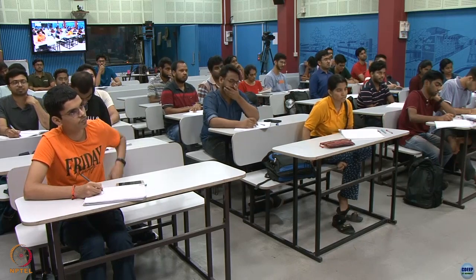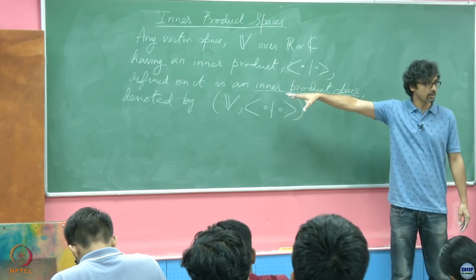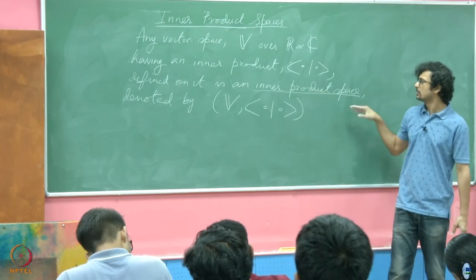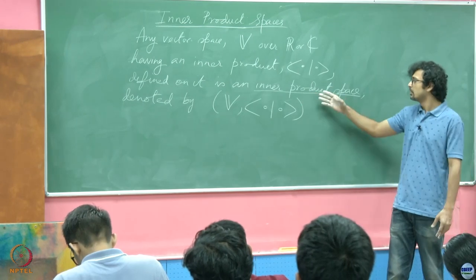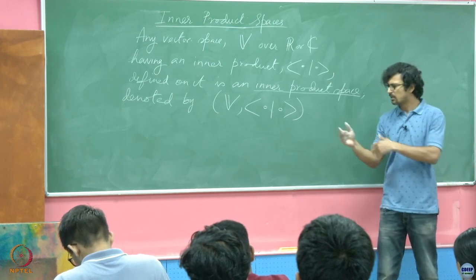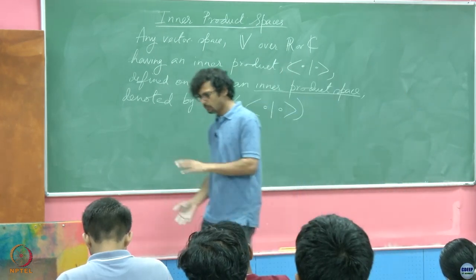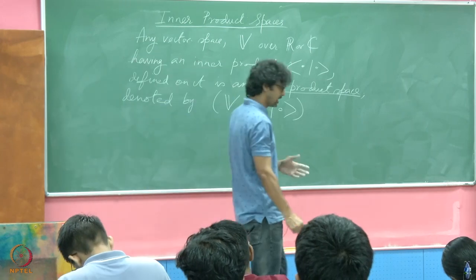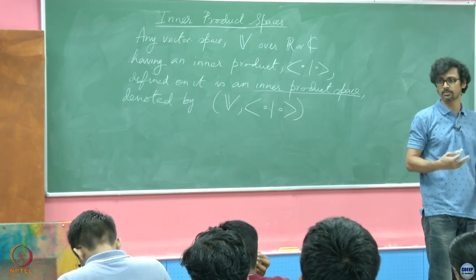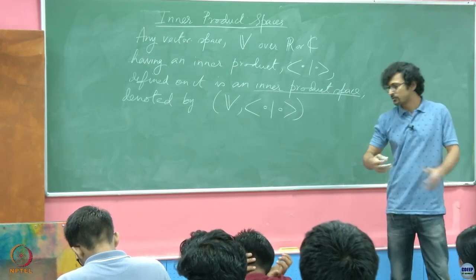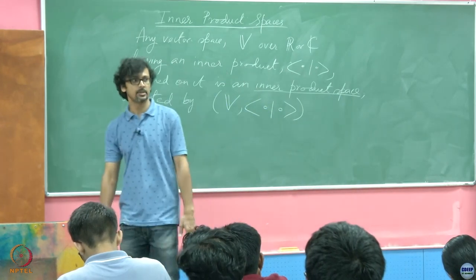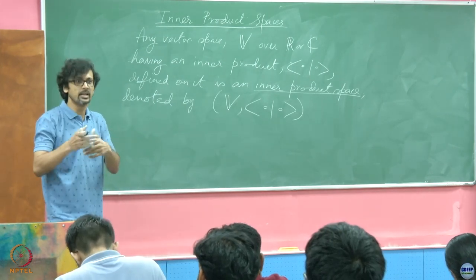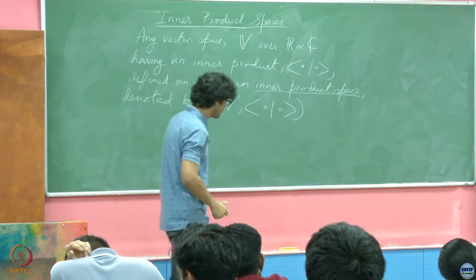We have also now seen that any vector space armed with this notion of an inner product — of course, the vector space has to be defined only over R or C, that is a prerequisite — but once it is armed with an inner product, it passes off by the moniker of an inner product space. We will now see certain consequences of a space being an inner product space. There are certain things about the topology of an inner product space that intrigue us. It allows us to do much of the mathematics in very much the same way that we did for Euclidean spaces, because it allows us to associate ideas like angles that we inherited from Euclidean spaces.